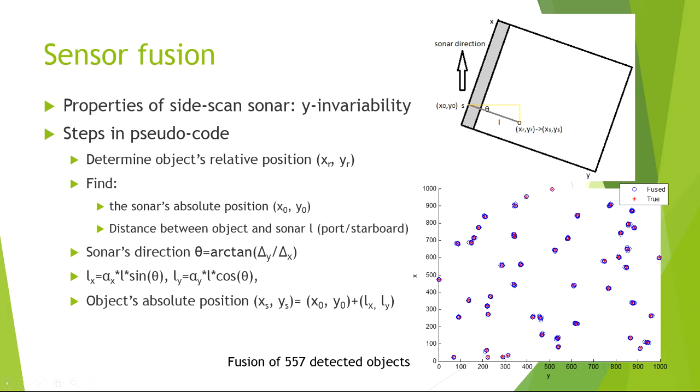First, we determine the object's relative position XR, YR. And then we find the sonar's absolute position XO, YO. And also the distance between the object and the sonar. There's a difference when it's a port image or a starboard image.